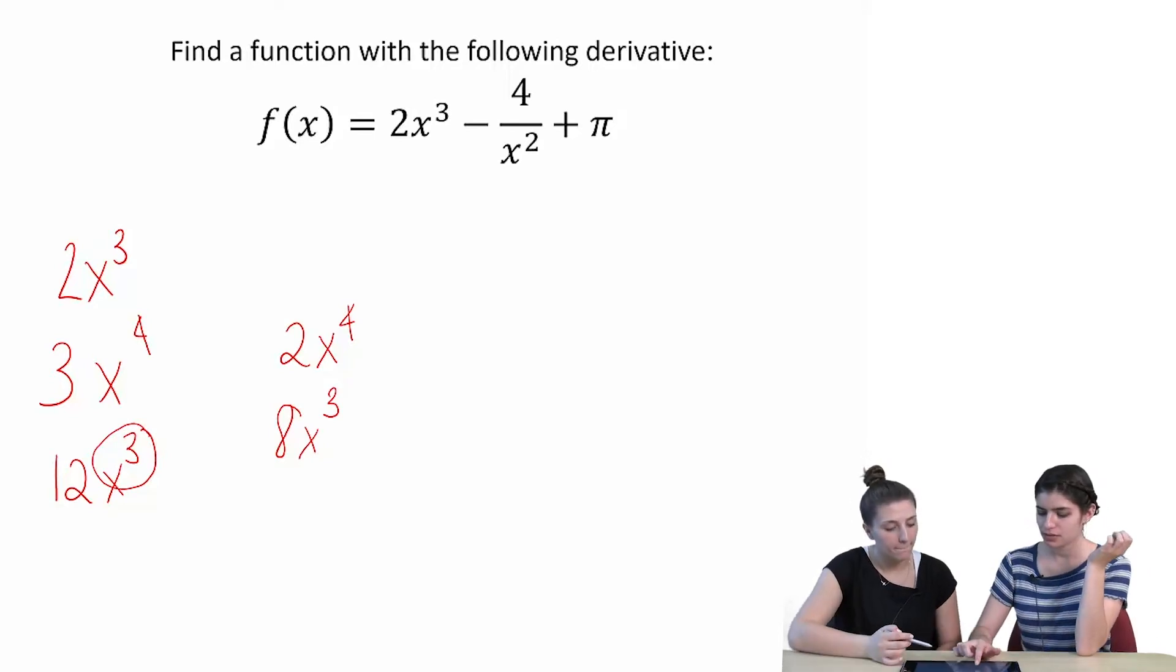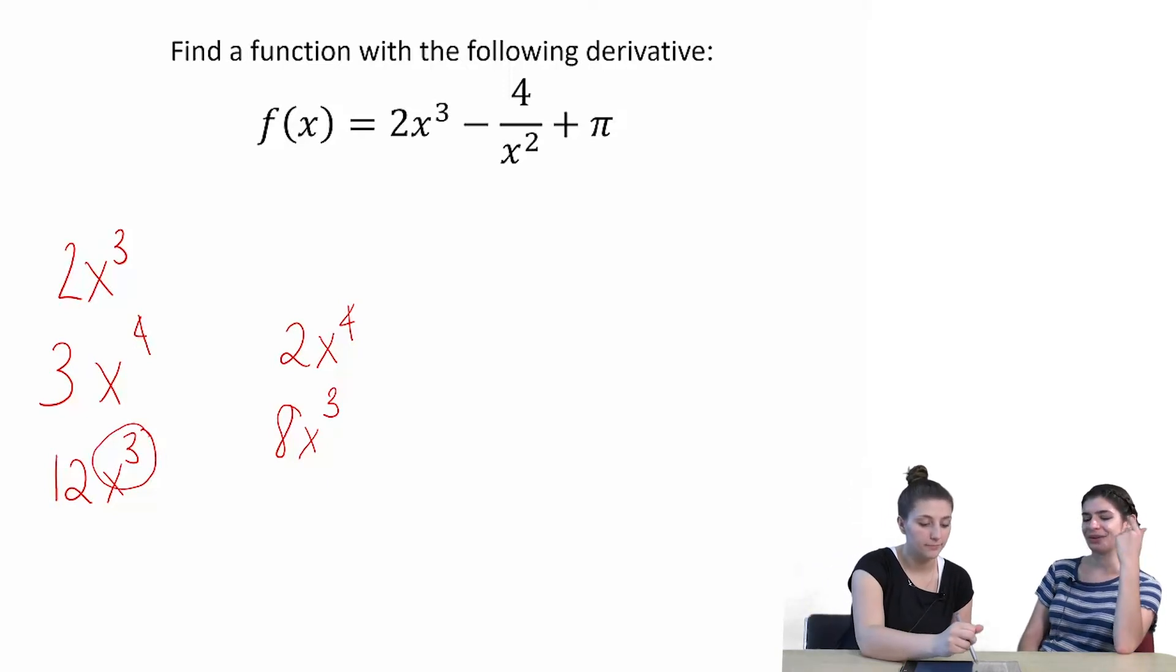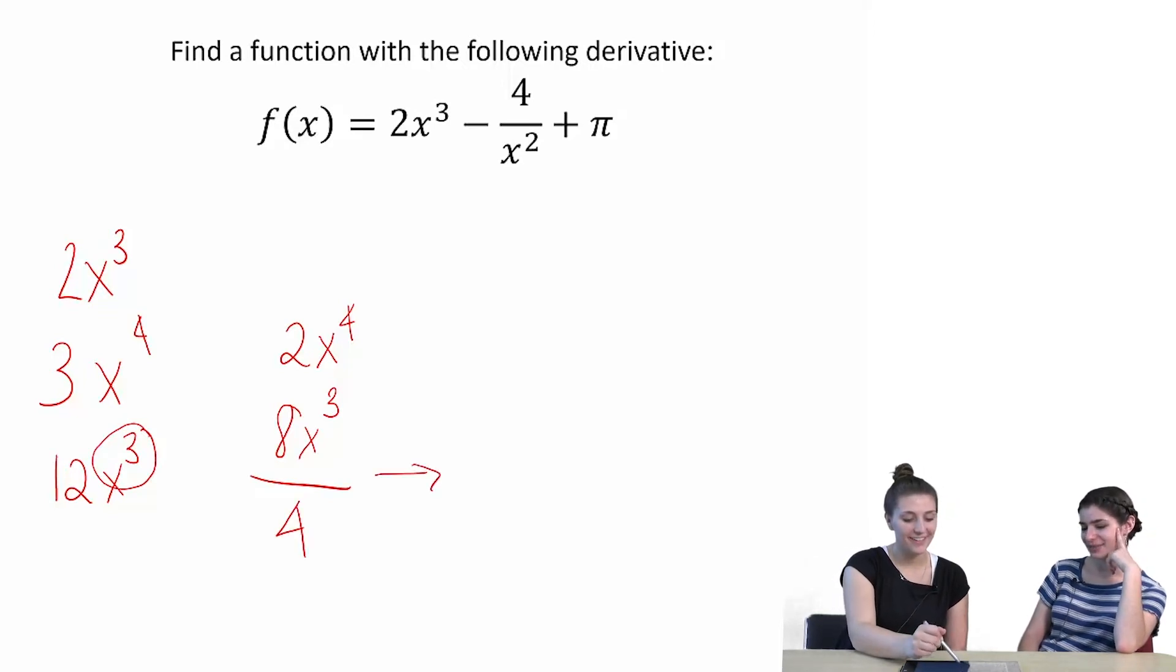We want 8x to the third instead to be 2x to the third, right? Yeah. So we want to divide it by four. We could do that. I don't know. Just, you know, because that's what we want in the end, but I don't really know why. So then we get 2x to the third.